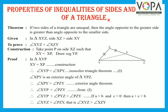Properties of inequalities of sides and angles of a triangle. Statement of this theorem: If two sides of a triangle are unequal, then the angle opposite to the greater side is greater than the angle opposite to the smaller side. If you observe the figure, it is clear that segment XZ is greater than segment XY. The angle opposite to the greater side is angle XYZ, and the angle opposite to the smaller side is angle XZY.